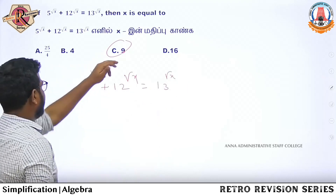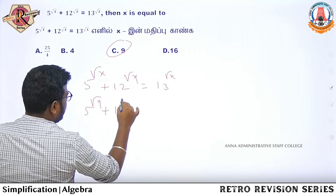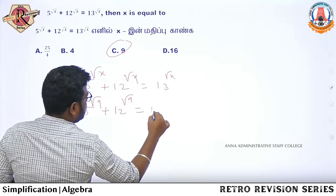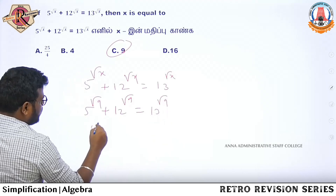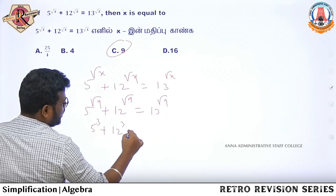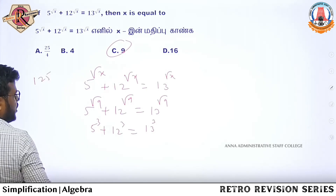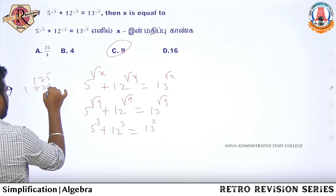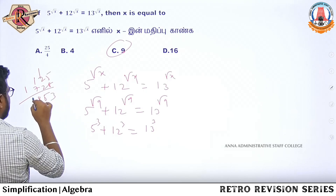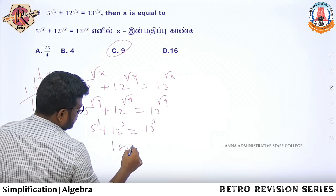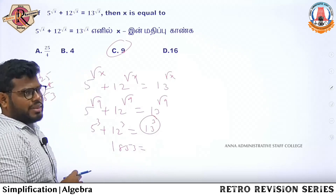If you say x equals 9, so 9 is root 9: 5 root 9 plus 12 root 9 equals 13 root 9. Root 9 is 3. So 5 cubed plus 12 cubed equals 13 cubed? 5 cube is 125, 12 cube is 1728, so 13 cubed would be 1853. So 13 cube value — is that equal to 13?